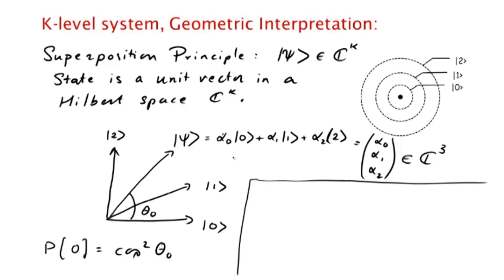This is true in general: the state vector is projected onto each of the vectors in the orthonormal basis in which we are measuring, with probability cosine squared θ, where θ is the angle it makes with that particular vector.